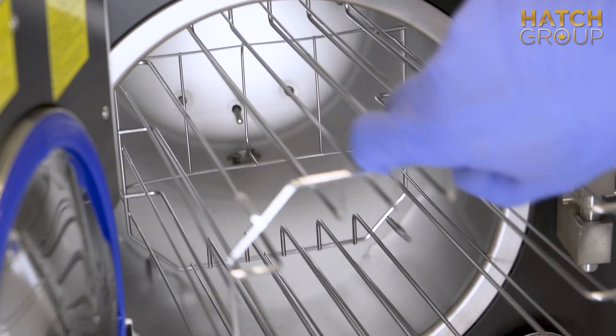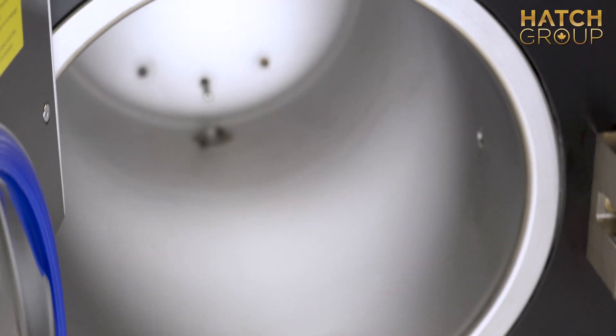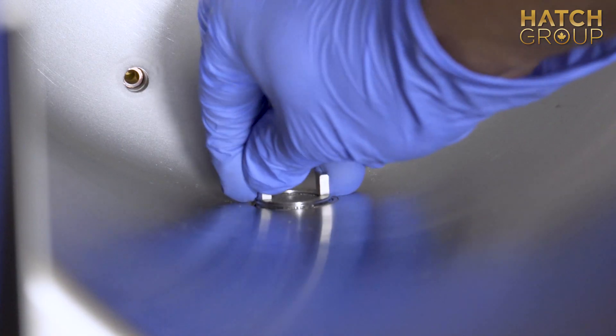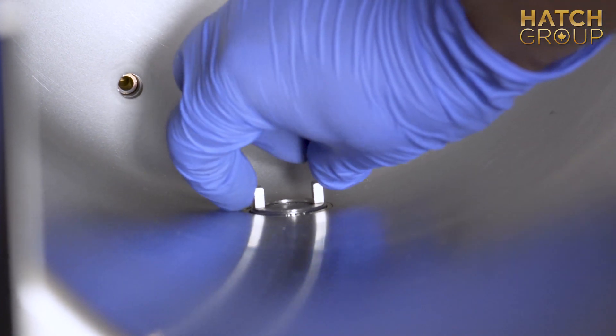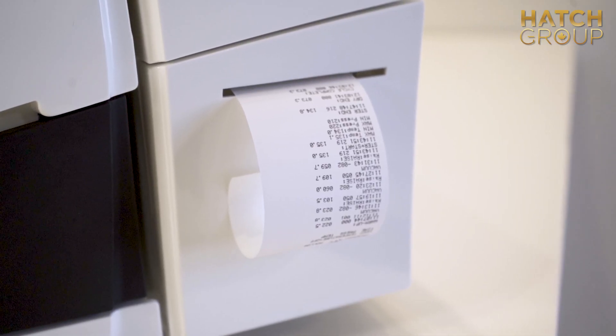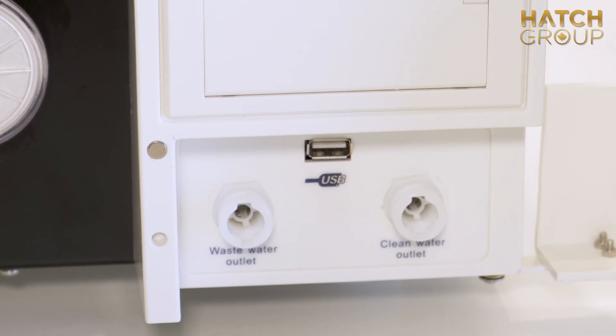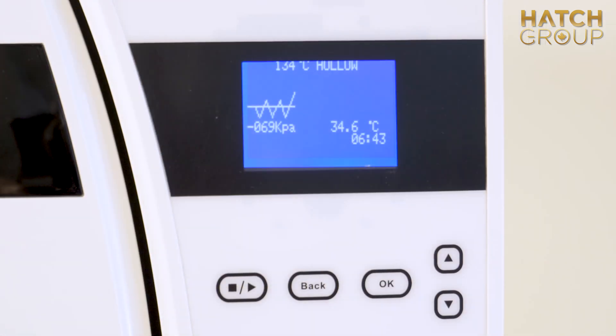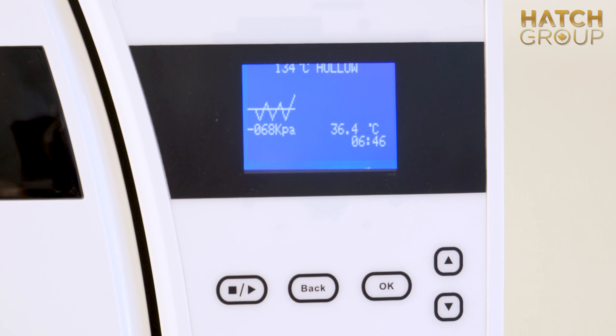All of our autoclaves at Hatch Group are automatic steam sterilizers that run cycles quickly, in as little as 38 minutes, and require minimal service and maintenance. By using the built-in thermal printer and standard USB port, this autoclave will allow you to store or print the historical data from each cycle at your convenience.